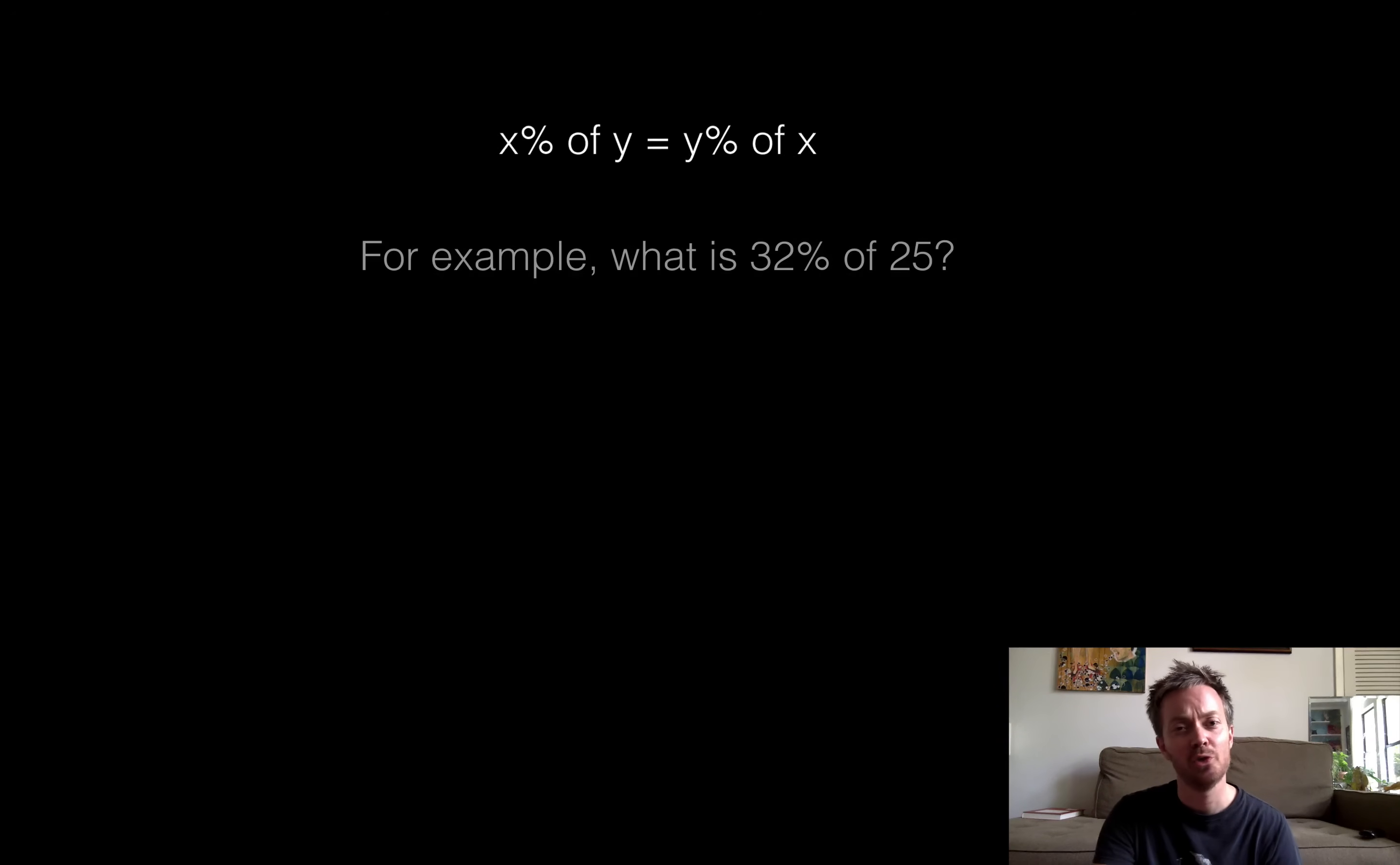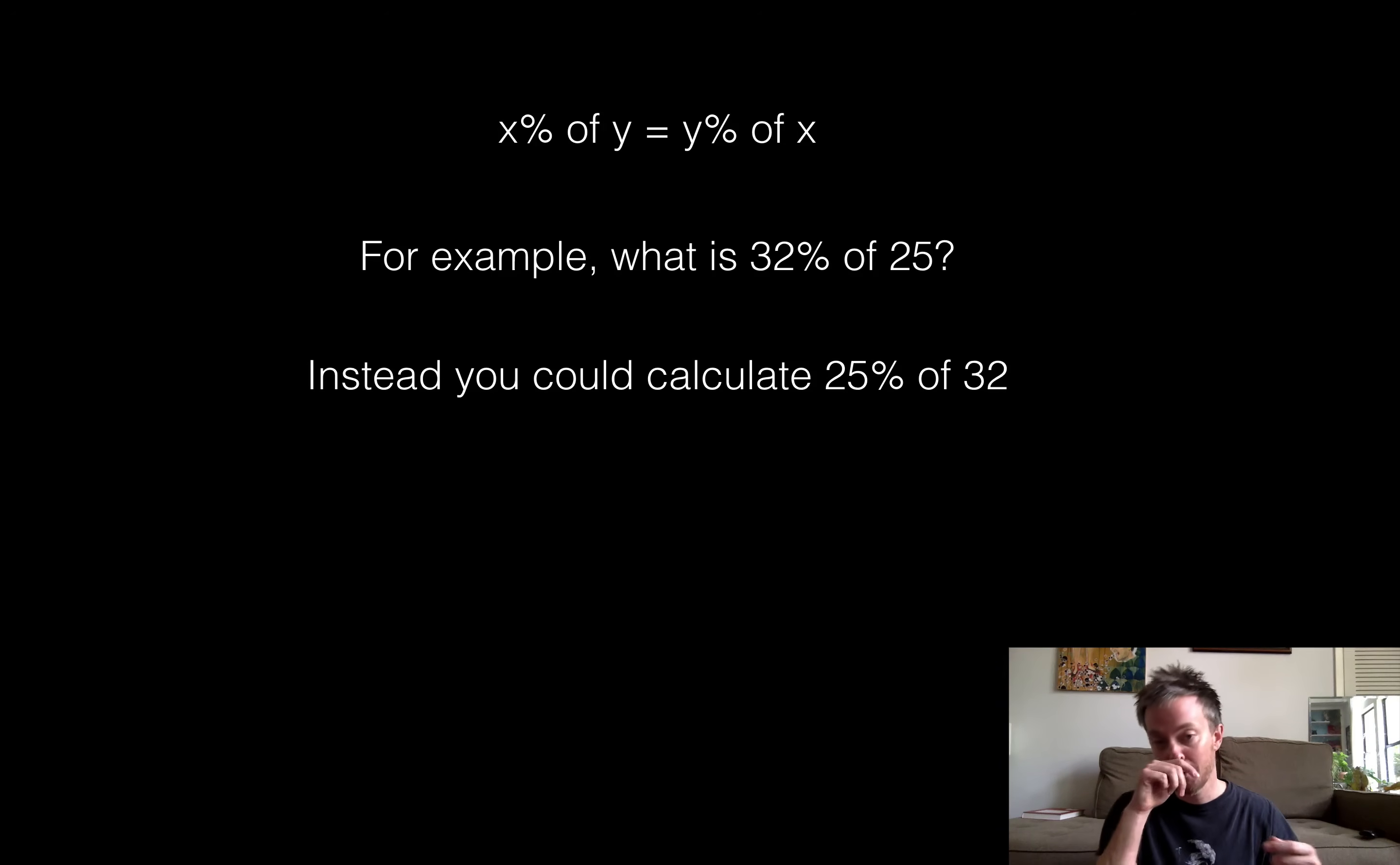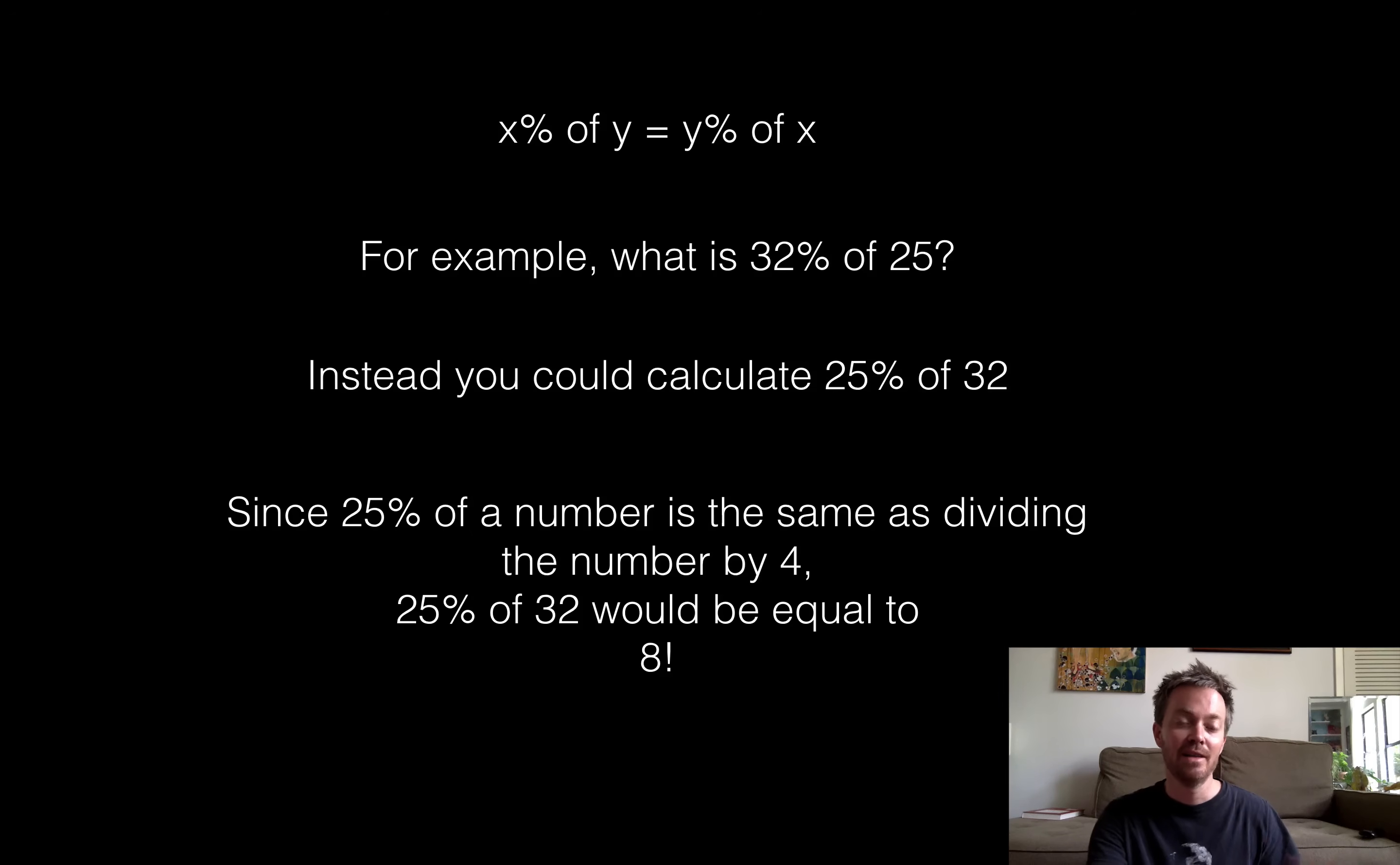And I was showing this to somebody and they thought this was really cool. So for example, suppose somebody wanted to know what is 32 percent of the number 25. You can turn that around and just say, okay, well let's just calculate 25 percent of 32 instead. And 25 percent is nice because finding 25 percent of a number is the same as dividing it by 4, so therefore 25 percent of 32 would be equal to 8. Likewise, 32 percent of 25 would be equal to 8.